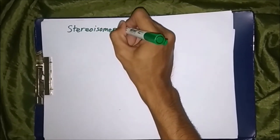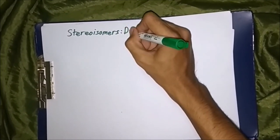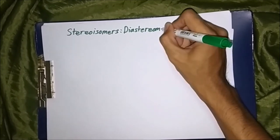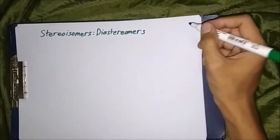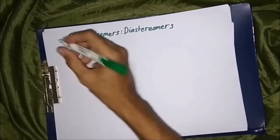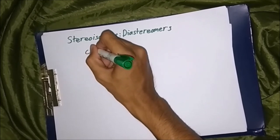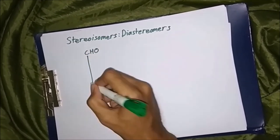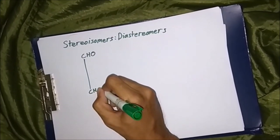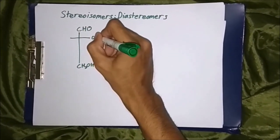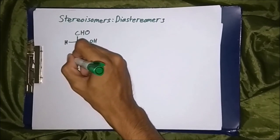For this part, explaining stereoisomers - the diastereomers. Diastereomers do not form like enantiomers do.